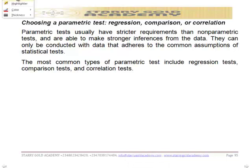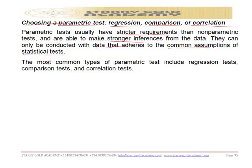Now let's look at when to choose a parametric test. Examples of parametric tests are regression, comparison, and correlation tests. Parametric tests usually have stricter requirements than non-parametric tests, but they are able to make stronger inferences from data. They can only be conducted with data that adheres to the common assumptions of statistical tests.